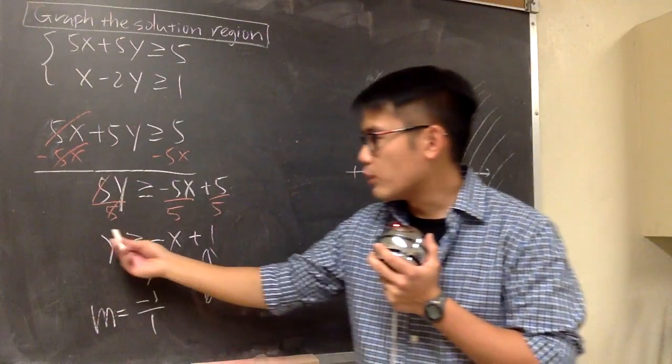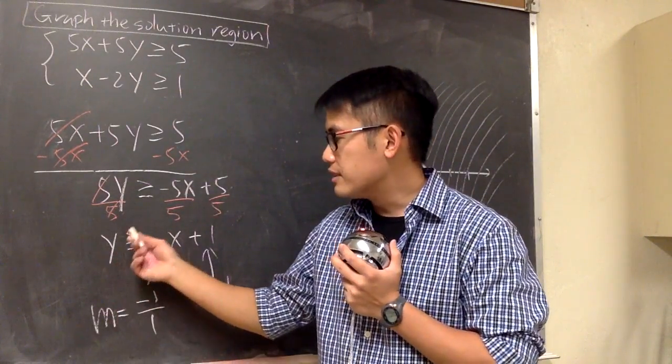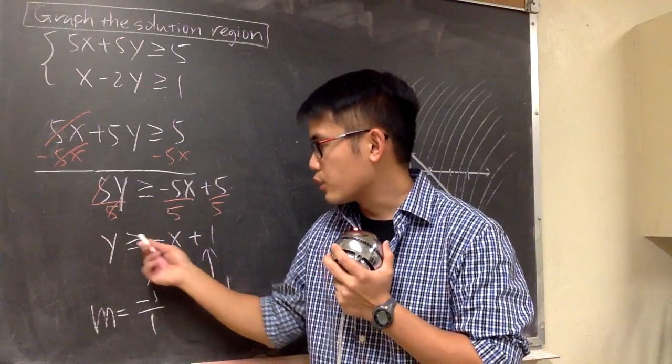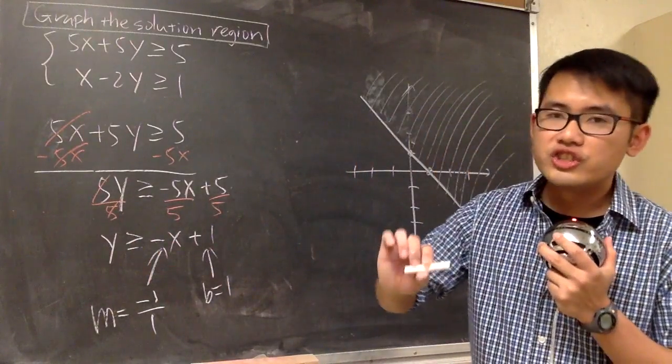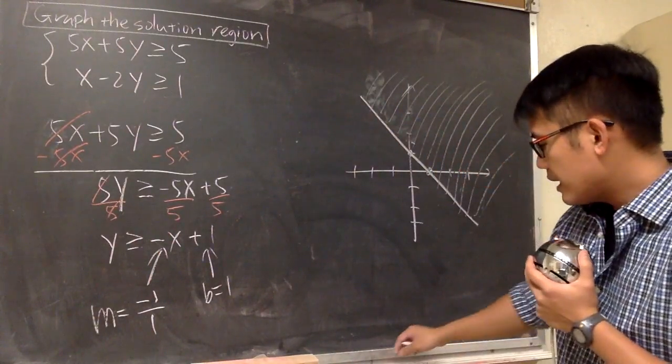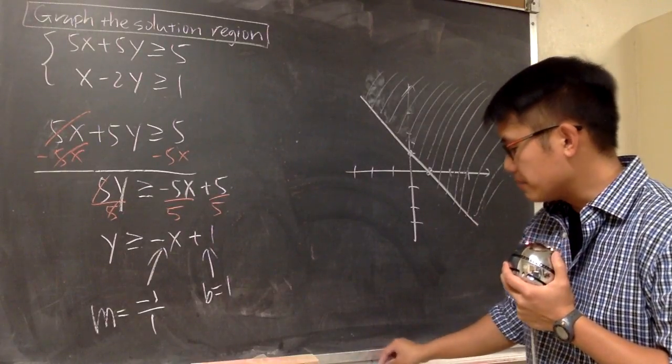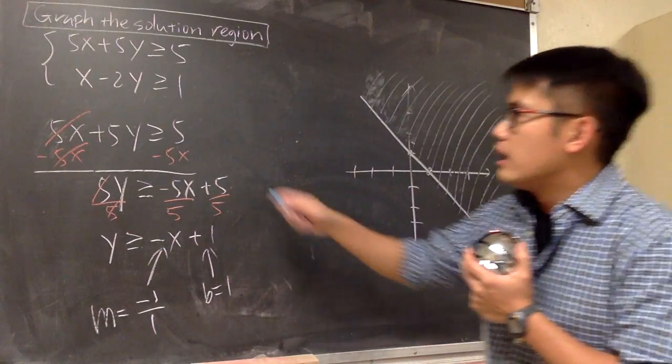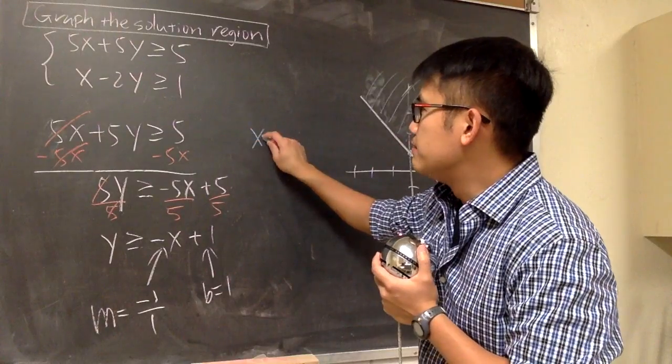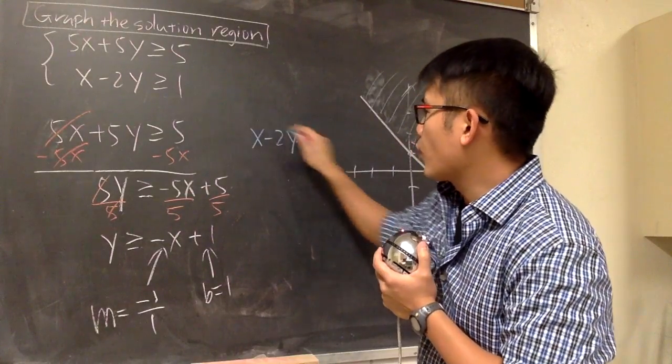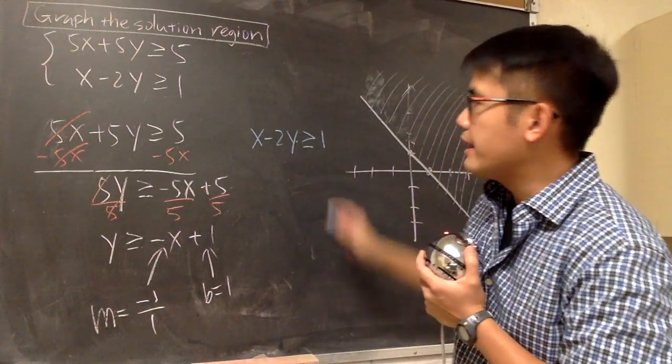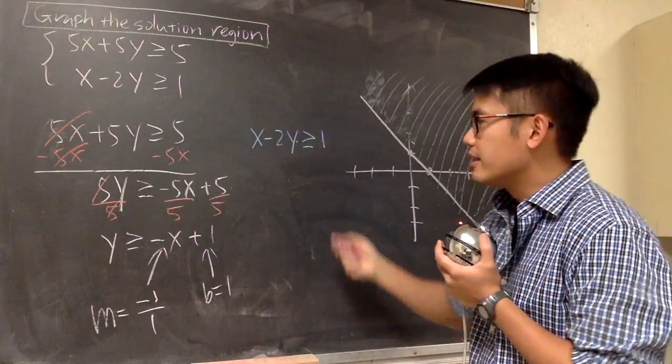Once again, whenever you have the y being isolated, if this is a greater than symbol, that means we shade up. All right, let's do the second one, and we'll do that in blue. Let's look at this. x minus 2y is greater than or equal to 1. Same business, get the y by itself first.